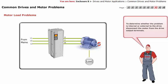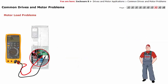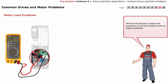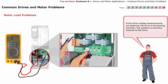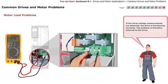To determine whether the problem is internal or external to the drive, disconnect the motor from the drive output terminals. Perform the dynamic output test procedure on all three phases with a digital voltmeter. If the three voltage measurements are balanced, the drive is functioning correctly. The problem is therefore external to the drive.